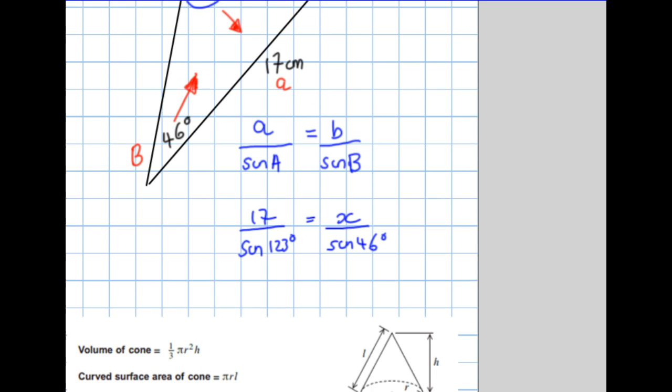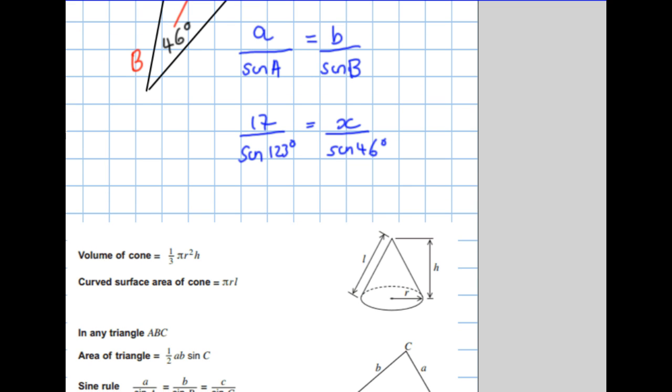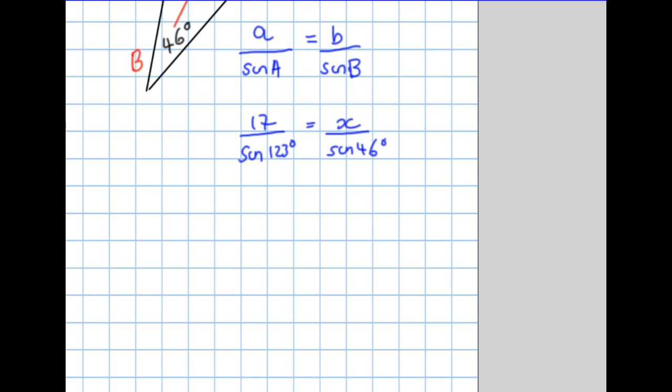Now what I've got to do before I get my calculator out is to make x the subject. I do that by multiplying both sides by sine 46 degrees. So we get 17 over sine 123 degrees times sine 46 degrees must equal x times sine 46 then divided by sine 46. The two sine 46's that I'm multiplying by and dividing cancel each other out, and I'm just left with x.